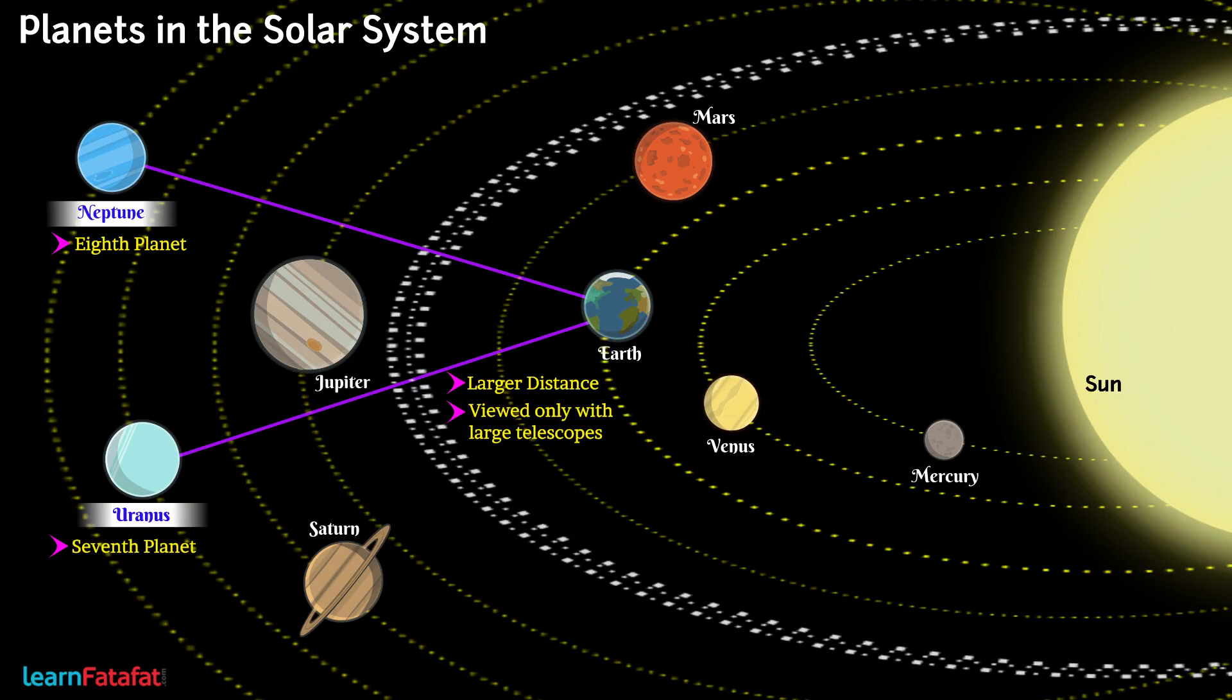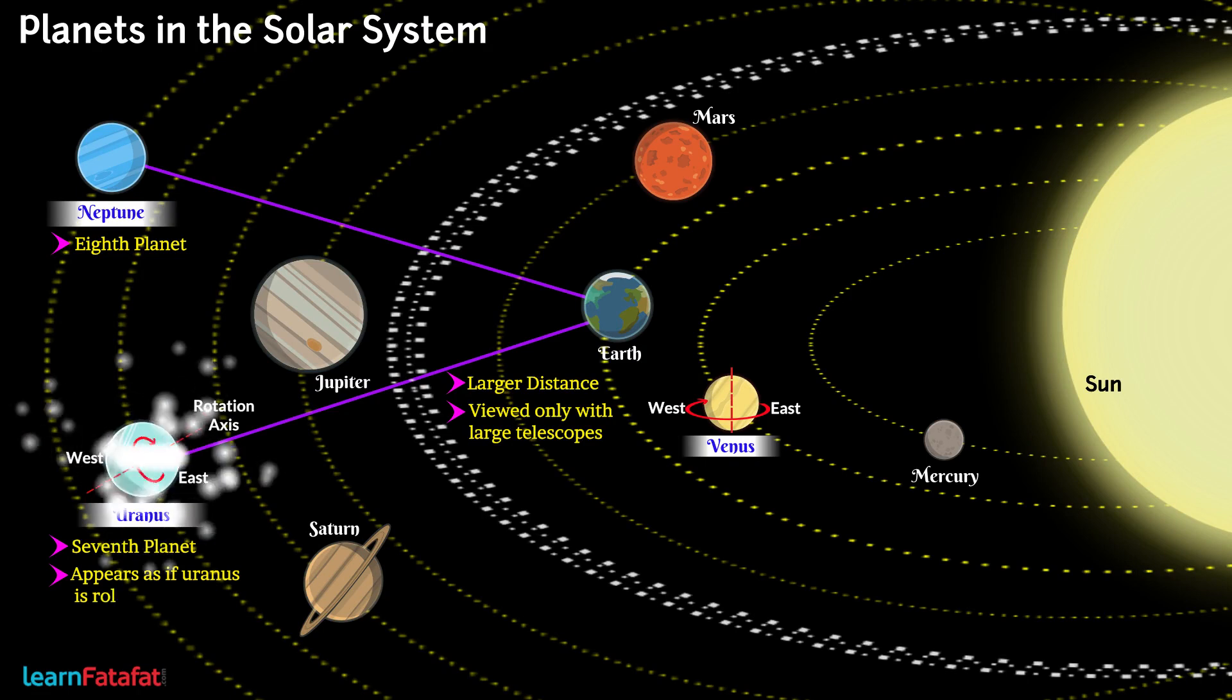Uranus has a highly tilted rotation axis on which it rotates from east to west just like Venus. It appears as if Uranus is rolling on its side.